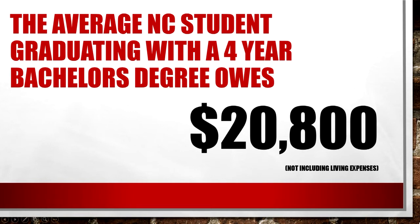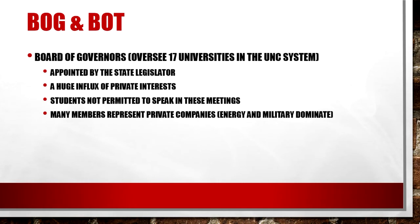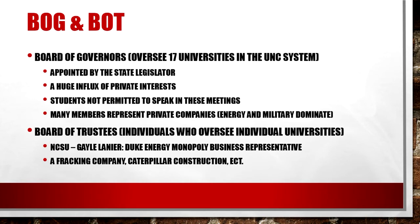I will be brief with these two points. The Board of Governors, which oversees the UNC system, is appointed by state legislators and are heavily influenced by private companies — in particular, energy and military companies. The Tea Party Speaker of the House recently appointed new corporate representatives to oversee the universities. Additionally, the Board of Trustees is also comprised of similar individuals. My example being Gail Lanier here at NCSU. She has served as a trustee for nearly 12 years and works for Duke Energy Company, the monopoly energy provider here in the southeastern US. Other companies on the board include Caterpillar Construction, who have been heavily involved in such things as the apartheid in Palestine.